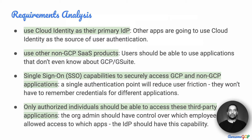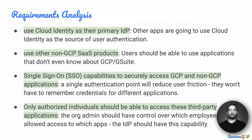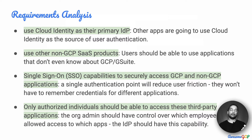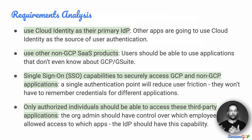They have to be able to use non-GCP SaaS products — not just Gmail and Slides and things within G Suite or other Google Cloud applications, but external CRMs as well. They need single sign-on capabilities to reduce user friction. If they log in to one place — in this case Cloud Identity — they should automatically be logged into the other applications they regularly use, without needing a separate set of credentials for each individual app.